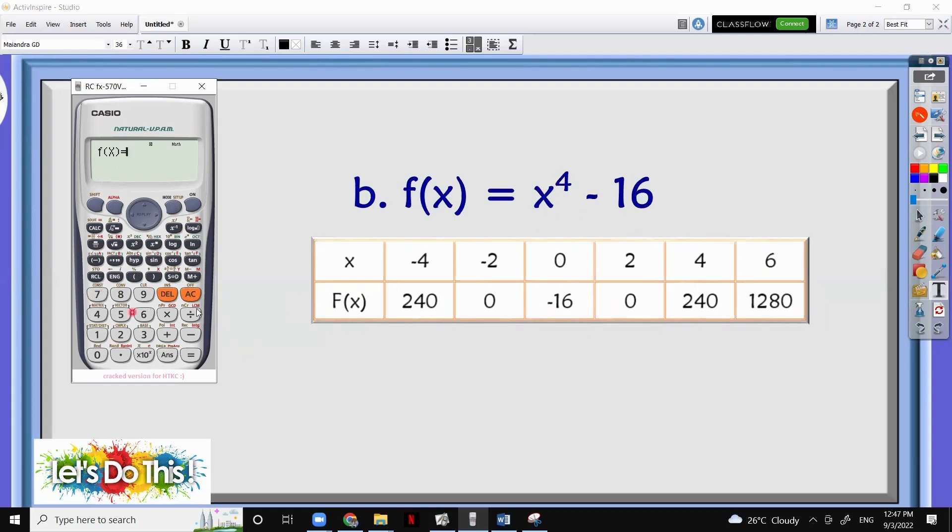And then let's input now this expression. So alpha and then our x. Since we don't have 4 here, we will choose this one and then we will input 4 minus 16. So equals.